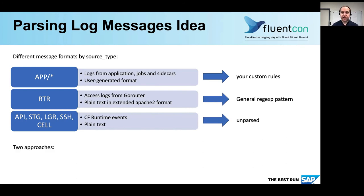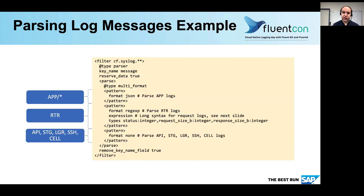When you have these different formats, there are two approaches you can take. The first is to use the multi-format parser plugin, which is the one I will showcase. The second is to switch parsing based on the source type. Here you see the multi-format parser in action. For the application I assume it writes JSON format, so that's the first part. The second part is the Go router logs — I left the expression out here because it's rather lengthy, and I will show it on the next slide. And the last one is format none for all the runtime events.